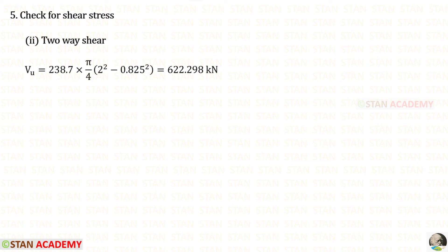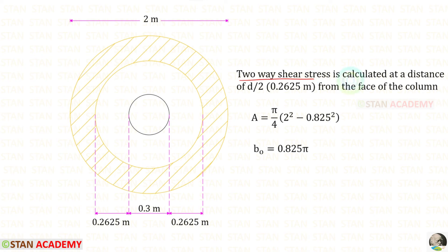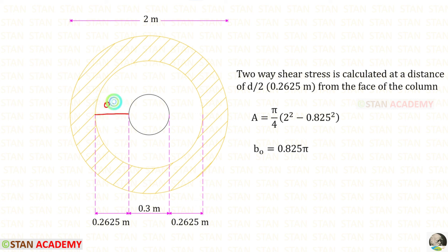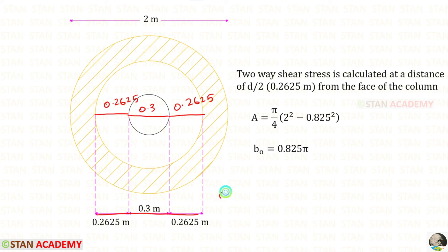Now let us check for two-way shear. Two-way shear stress is calculated at a distance D upon 2 from the face of the column. D is 0.525 m divided by 2, giving 0.2625 m on each side. With the column diameter of 0.3 m, adding all distances we get 0.825 m.